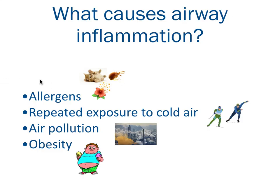What causes this airway inflammation? Most of the time it's caused by allergens — allergic asthma — like cat dander, house dust mite, or pollens. But Olympic athletes who do winter sports like speed skaters and cross-country skiers often have asthma because of repeated exposure to cold air. The constant damaging of the epithelial cells somehow induces asthma. Also, air pollution and exposure to noxious gases can induce asthma. An important cause in the Western world is obesity, which is associated with a low-grade systemic inflammation that can also affect the lungs and cause asthma.